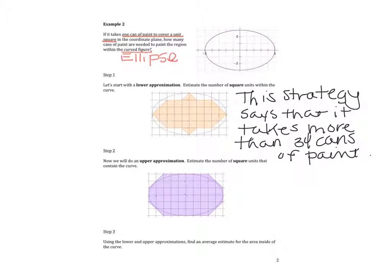Now, we'll do an upper approximation, and we'll estimate the number of square units that contain the curve. It's going to be all on the inside and a little on the outside. Go ahead and do that now. Make sure you pause. Under this strategy, finding the upper approximation, I come up with about 55 square units. This strategy suggests less than 55 cans of paint, because there's some overage here. And there's some underage in the lower approximation, so we're going to need more than in the first case.